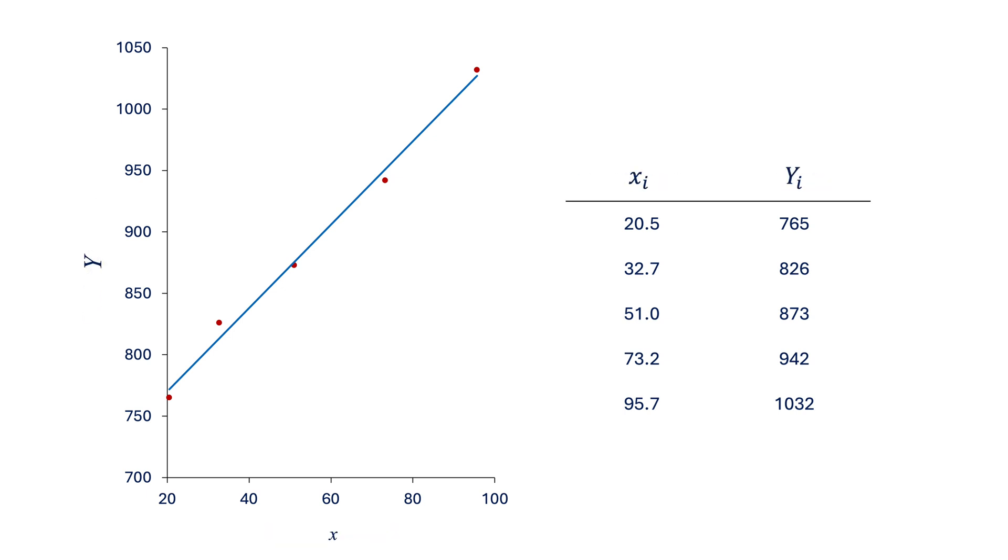So at any point in our experimental data, we have xi on the x-axis and the corresponding yi on the y-axis. And our goal now is to find the equation of this straight line.